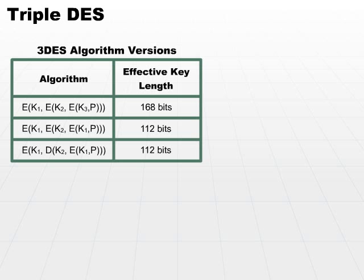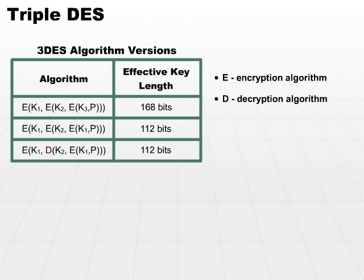Let's take a look at how each one is applied. Here are the three different Triple DES algorithm versions. In order to understand our table, let's look at some definitions. E stands for the encryption algorithm — when we apply E, we're doing the encryption. D stands for the decryption algorithm. Our keys are represented by K1, K2, and K3.